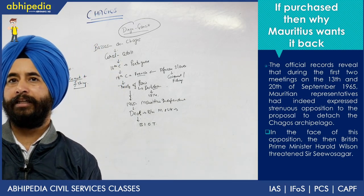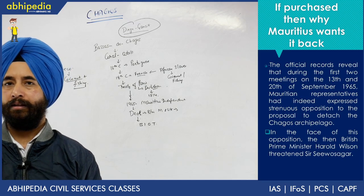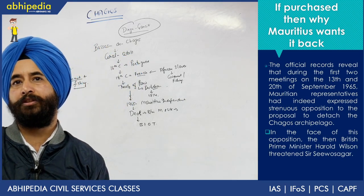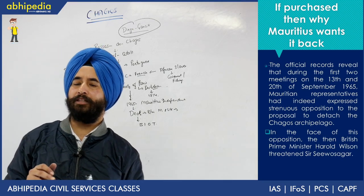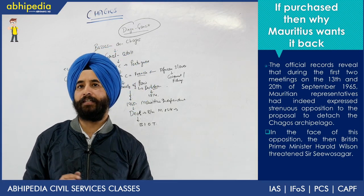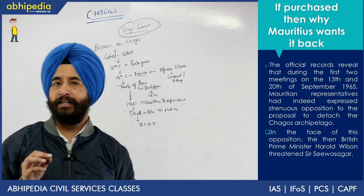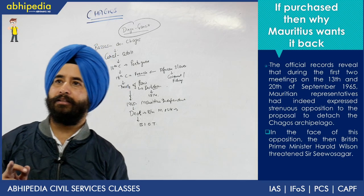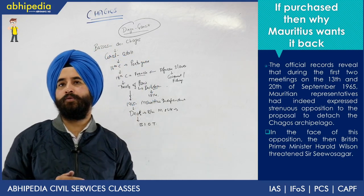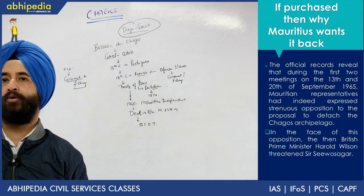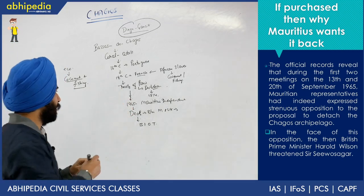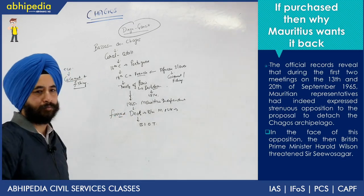This is where the dispute started. Britain kept Chagos; Mauritius got independence around 1964–65. Mauritius claimed that they need Chagos back. They had received 3 million pounds — but looking at official papers, Mauritius was actually not interested in surrendering Chagos. At that time, the Mauritian Prime Minister was forced by British PM Harold Wilson: 'If you don't give Chagos, we will not give you independence.' So though it is said to be a deal, it was in fact a forced deal.